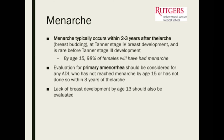Menarche usually occurs within two to three years after thelarche — breast budding — and doesn't usually happen before Tanner stage four breast development. By age 15, 98% of females will have menarche. Evaluation for primary amenorrhea should be considered for any adolescent who has not reached menarche by age 15, or within about three years of breast development. If there's no breast development by age 13, that should also be evaluated.